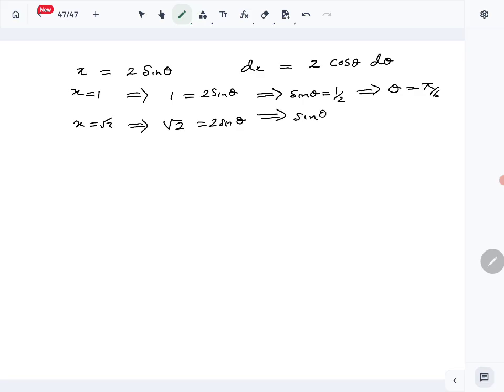And when x equals square root 2, square root 2 equals 2 sine theta, so sine theta equals 1 over square root 2, which means theta equals π over 4. Then we can write our integral in this form.